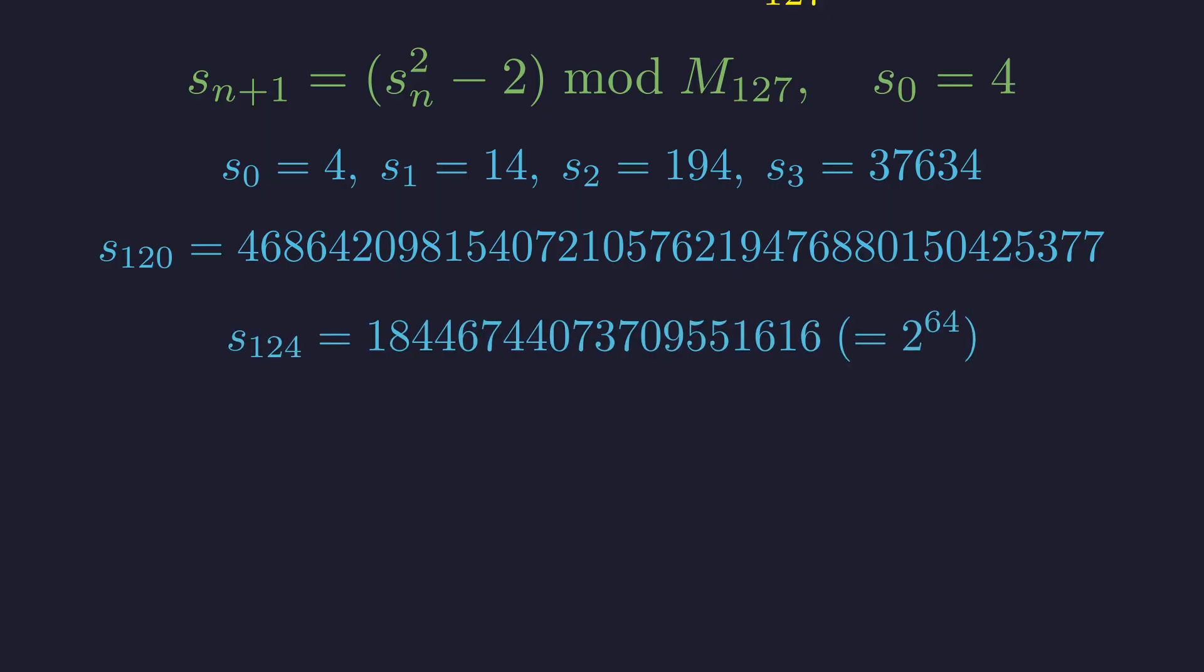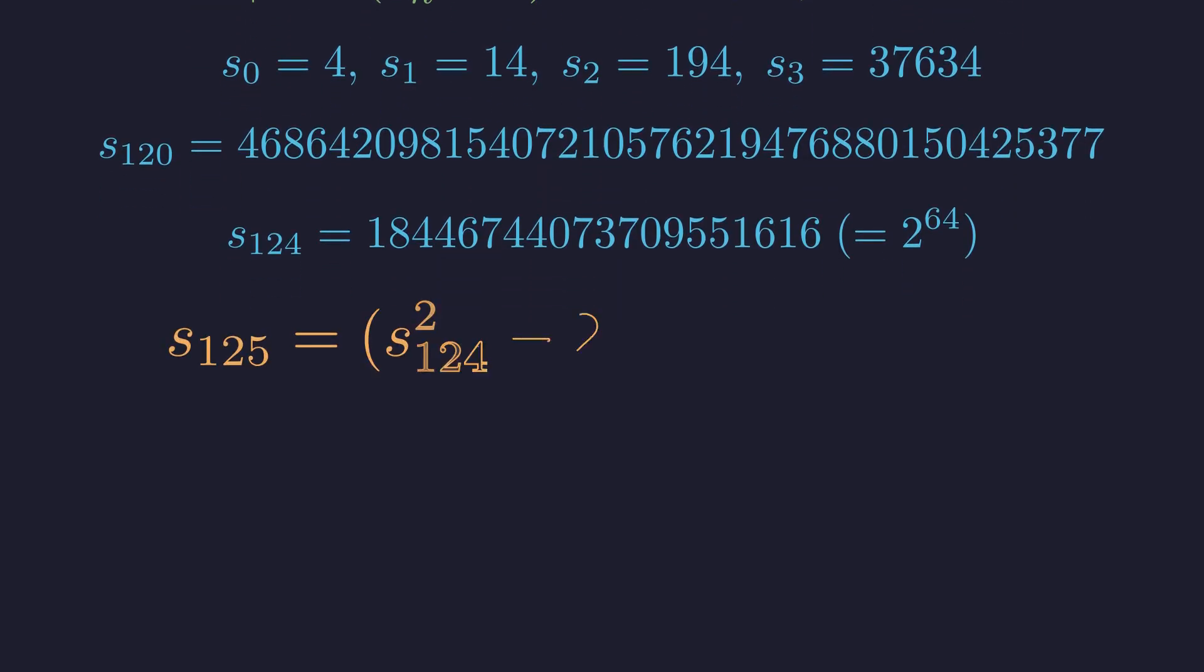Just before the final step, at term 124, something amazing happens. The sequence lands on a perfectly clean power of 2. And when you take that number through one final iteration, the result is exactly 0.